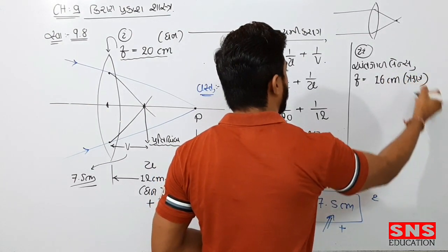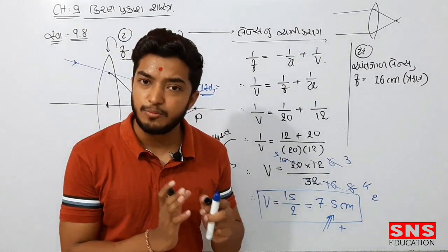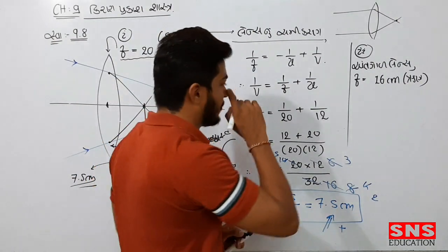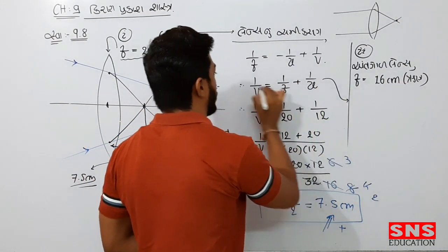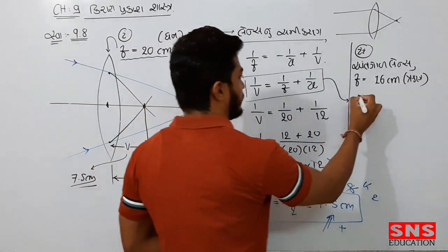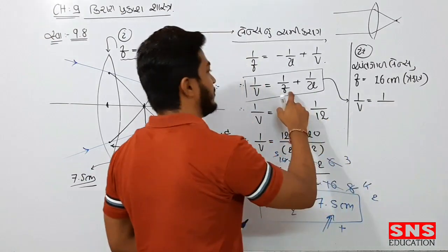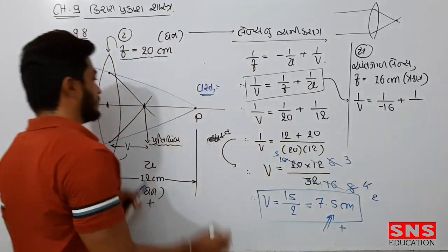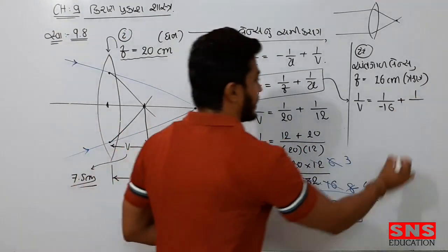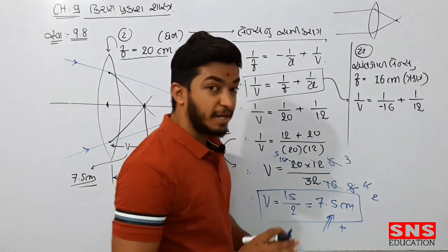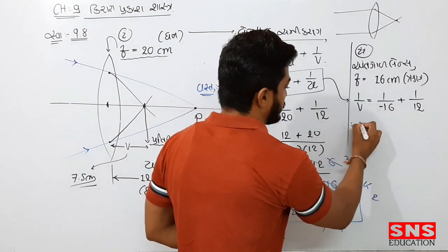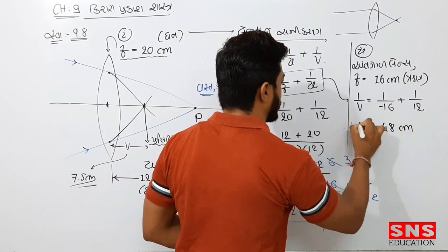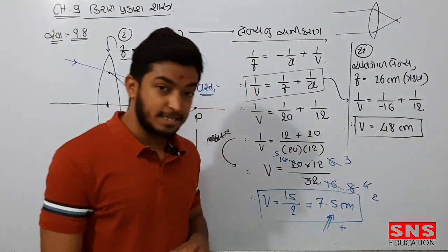And now we have to take the same approach. The value is positive; the value is negative and the value of the candle is negative. So, 1 upon v is equal to 1 upon f — the value of f is equal to minus — plus 1 upon u. The value is 12. Please practice the same way. Let us see — the answer is 48 cm. So that will be done.